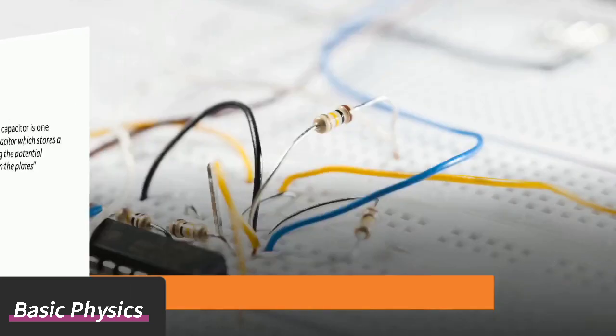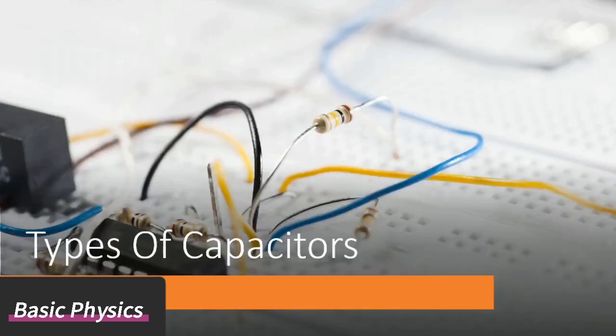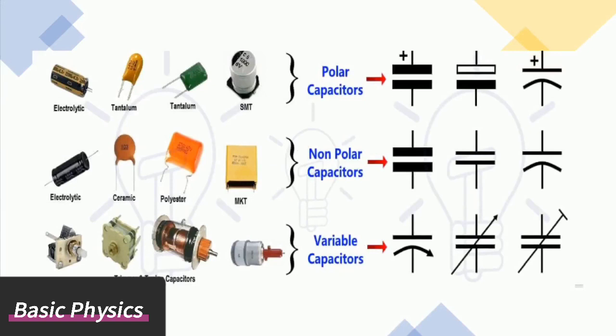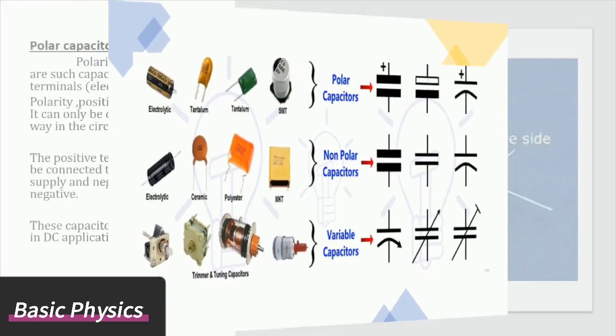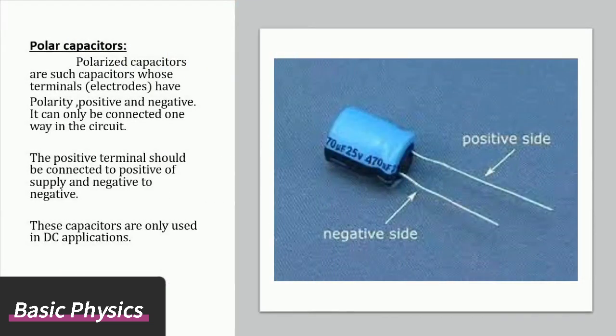Types of capacitors: Here are different types of capacitors. Polar capacitors: Polarized capacitors are such capacitors whose terminals (electrodes) have polarity, positive and negative. They can only be connected one way in the circuit. The positive terminal should be connected to positive of supply and negative to negative. These capacitors are only used in DC applications.